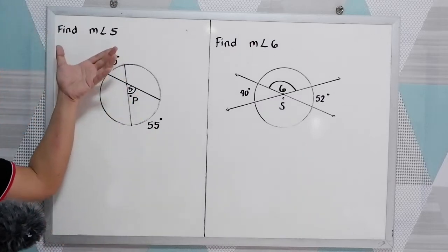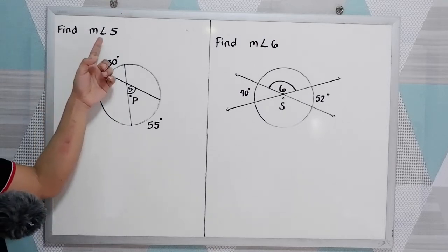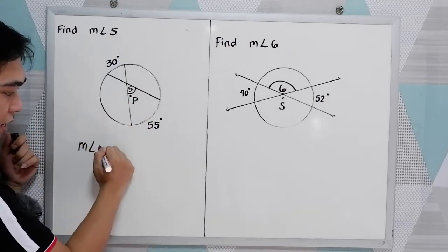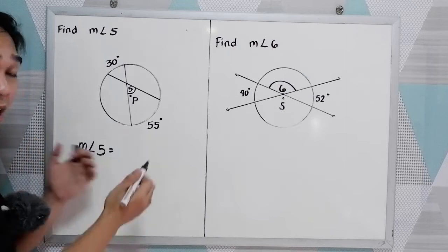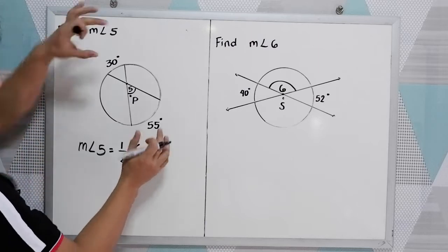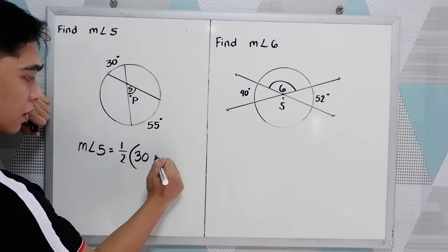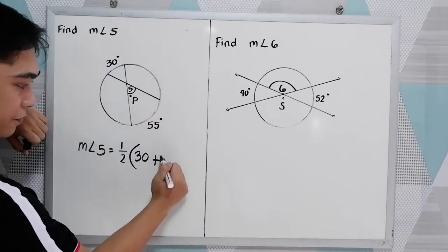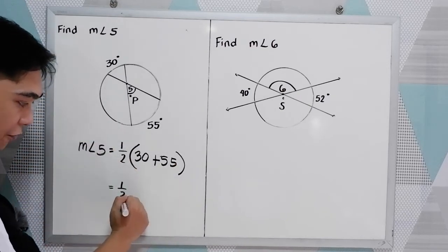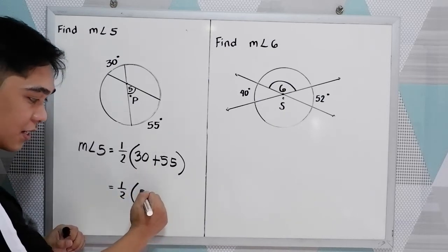Let us solve the first number, or the first illustration. We're going to find measure angle 5. So, measure angle 5. That is, in our theorem, one-half the sum of the intercepted arcs. So in this case, we have 30 and 55. So we need to add that. Now, one-half of 30 plus 55, that is 85.